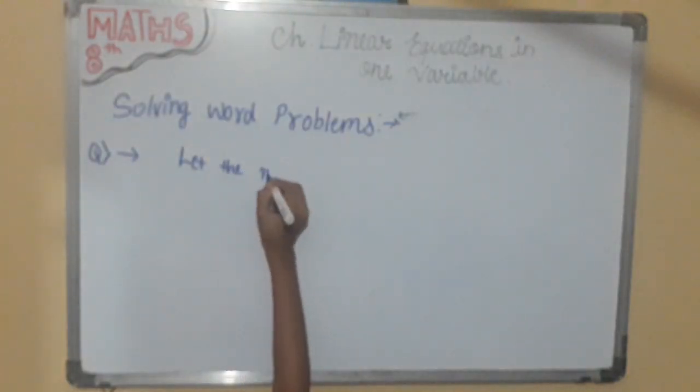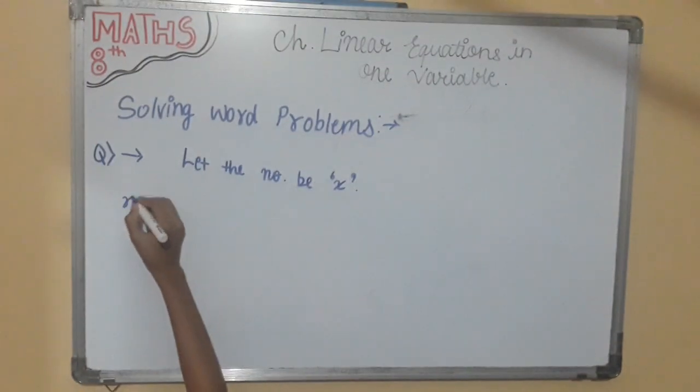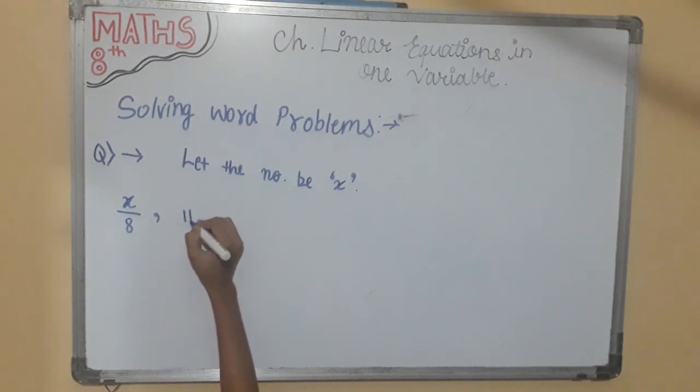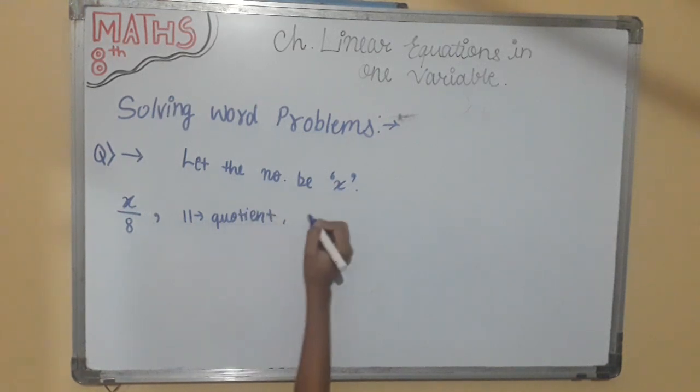So let the unknown number be x. And they are saying x divided by 8, we get 11 as quotient and 6 as remainder.